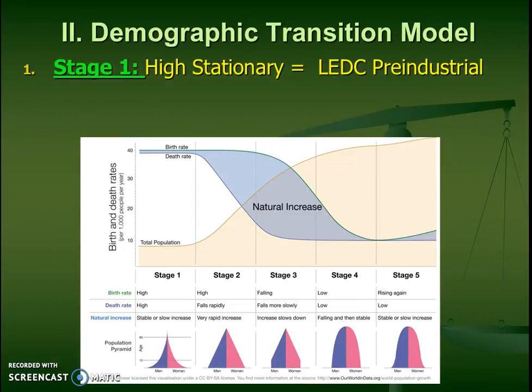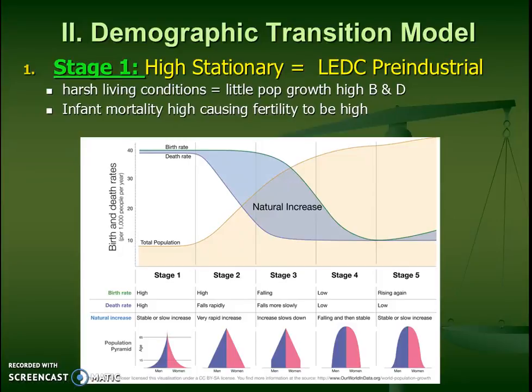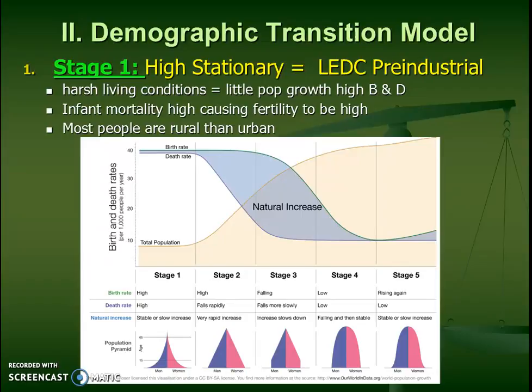That first stage is referring to a stationary population. We call it high stationary because it's pre-industrial. It's usually going to be an LEDC. Their conditions are really harsh to live in. They're going to have a really high birth rate and high death rate, as we can see from this chart. That's usually because infant mortality is really high, which causes them to have lots of babies, and usually that's because sanitation is horrible and there's not a lot of food. Luckily, this is not as common in the world, but it definitely does happen.